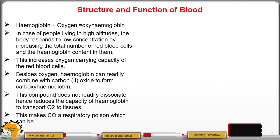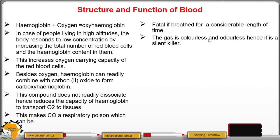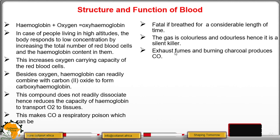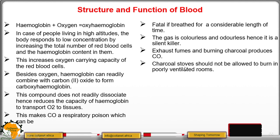That is why carbon monoxide is a respiratory poison — fatal if breathed for a long time. It is colorless and odorless, which is why it is called a silent killer. Exhaust fumes and burning of charcoal produce carbon monoxide, so charcoal stoves should not be allowed to burn in poorly ventilated rooms.